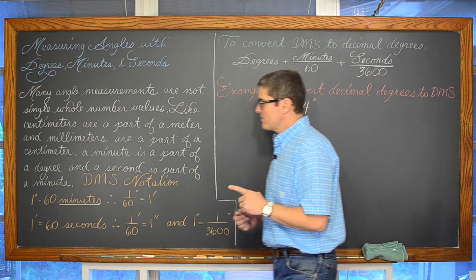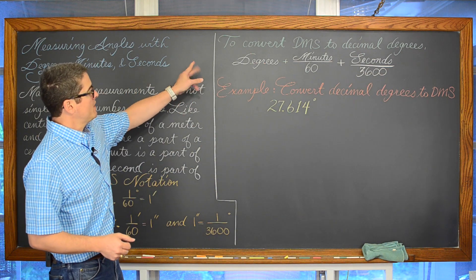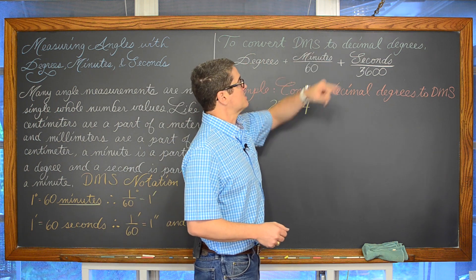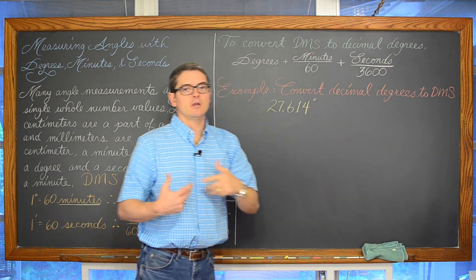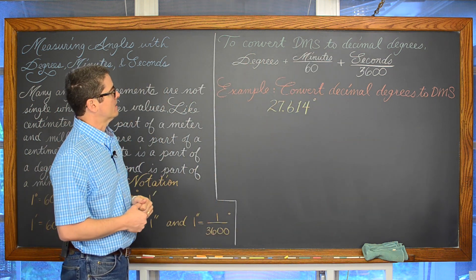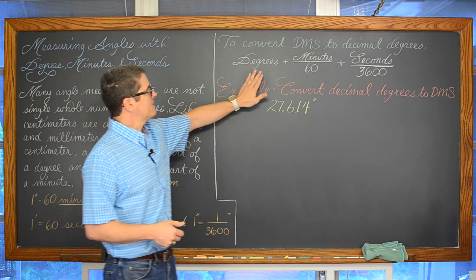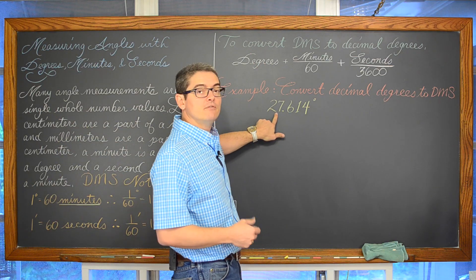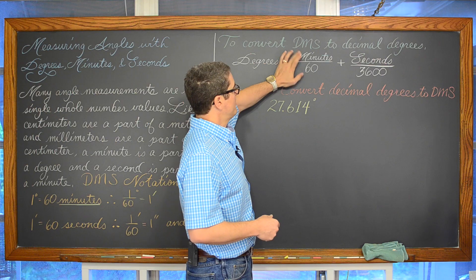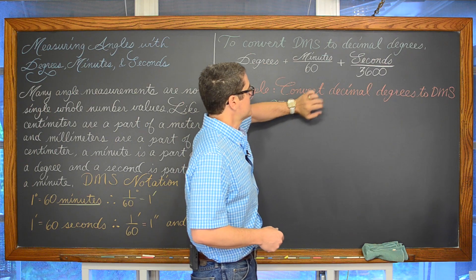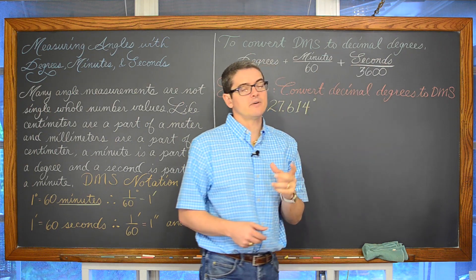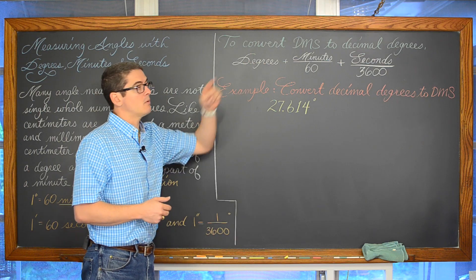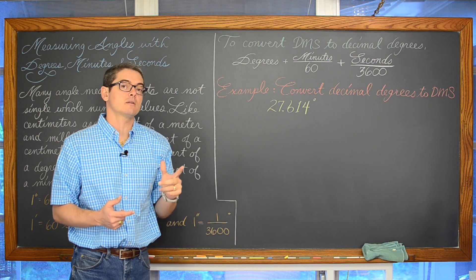So if you want to convert from DMS notation — degree, minute, and seconds — to a decimal degree, more like we would be used to with a calculator, we are going to take the number of degrees as the whole number value in the front, take the number of minutes and divide by 60, and then take the number of seconds and divide that by 3600, and add up those three values. That is what we are going to use in our second example.